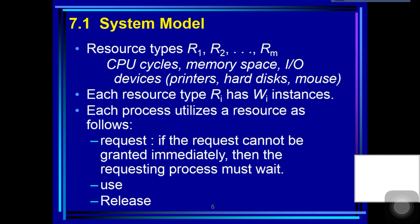To illustrate a deadlock state, deadlock may involve different resource types. For example, consider a system with one printer and one DVD drive. Suppose process Pi is holding the DVD and process Pj is holding the printer. If Pi requests the printer and Pj requests the DVD drive, a deadlock occurs.